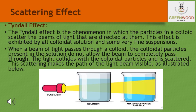Let us discuss about the Tyndall effect. The earth's atmosphere is a heterogeneous mixture of minute particles. These particles include smoke, tiny water droplets, suspended particles of dust, and molecules of air. When a beam of light strikes such fine particles, the path of the beam becomes visible. The light reaches us after being reflected diffusely by these particles. The phenomenon of scattering of light by colloidal particles gives rise to the Tyndall effect, as you have already studied this concept in class 9.